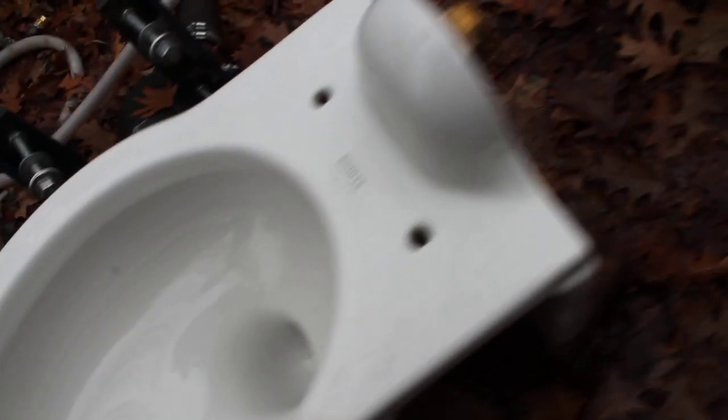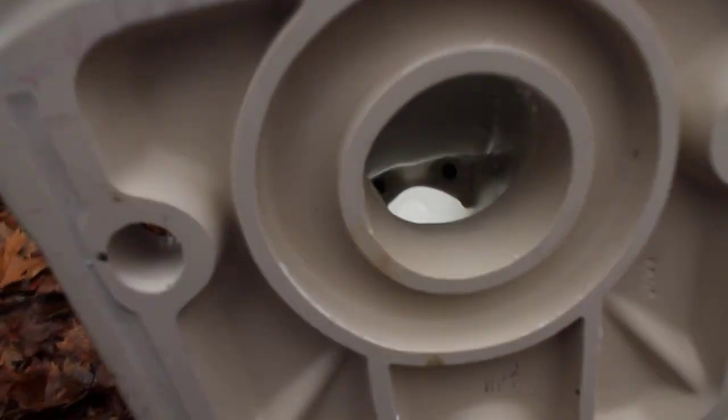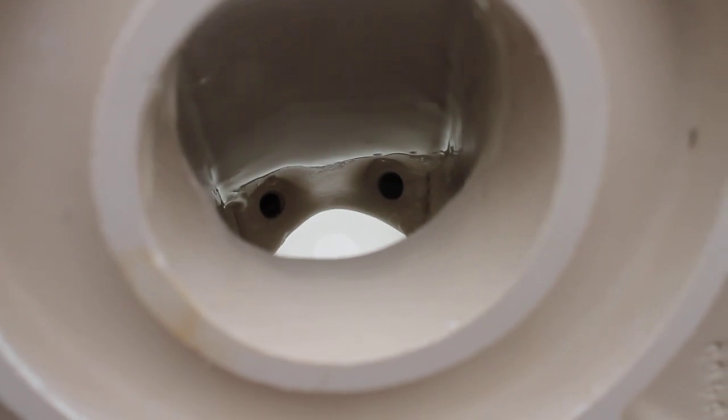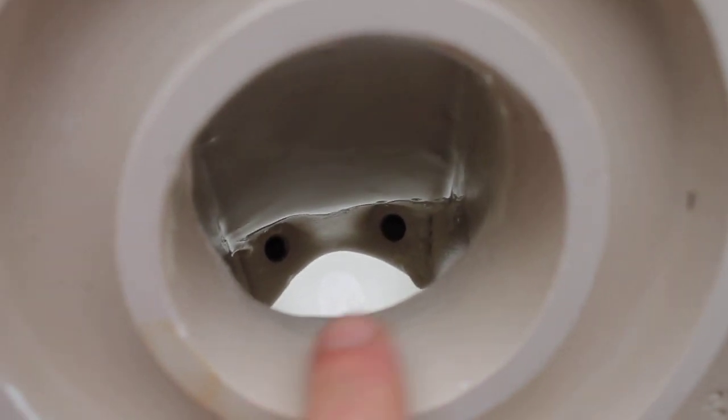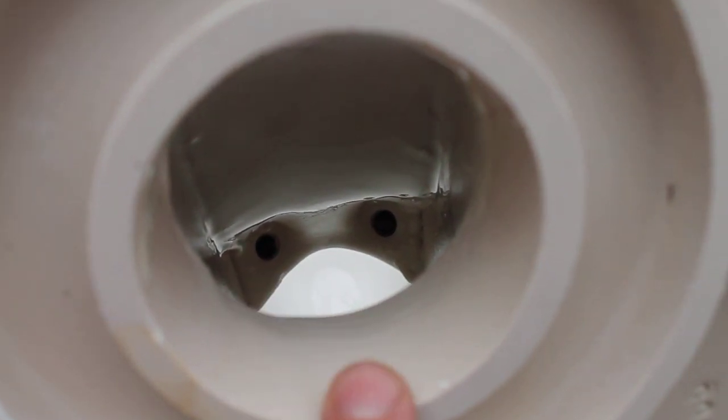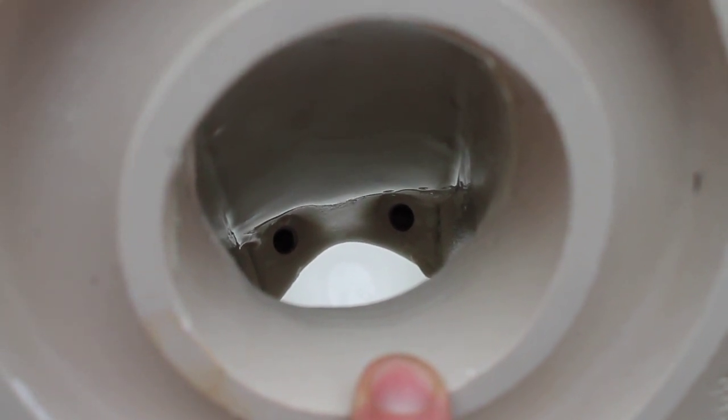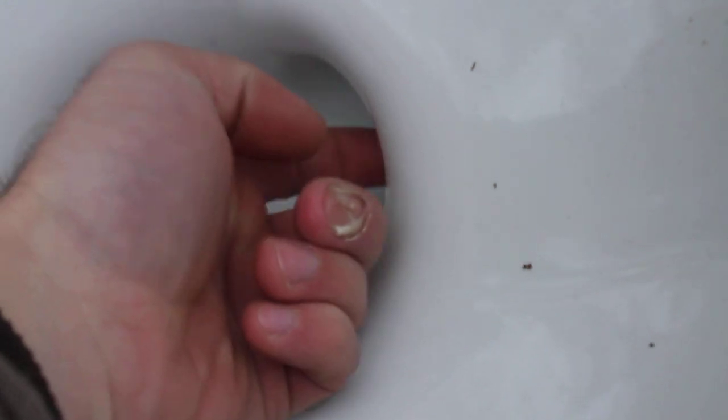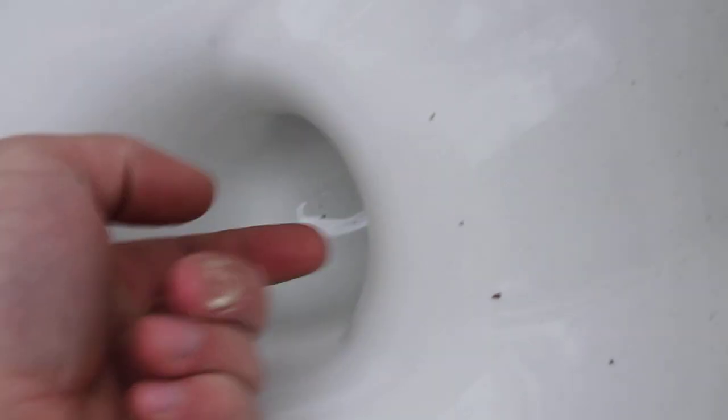But what they usually have are, I'm going to try and zoom in here, see those two holes right there? Those are siphon jets, those are concealed siphon jets that are right behind this trapway lip and they're pointing up the trapway, so they blow water up into the trap.